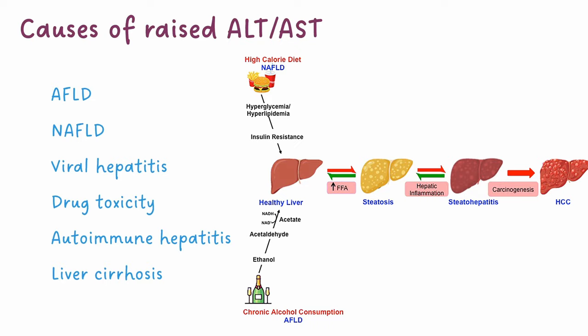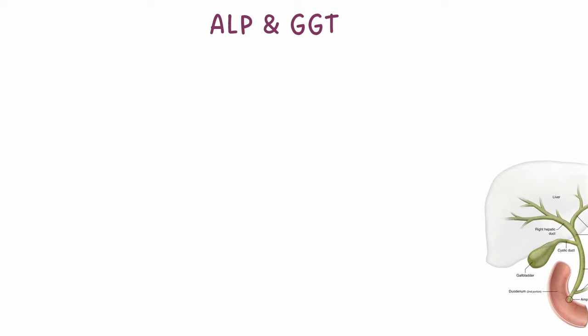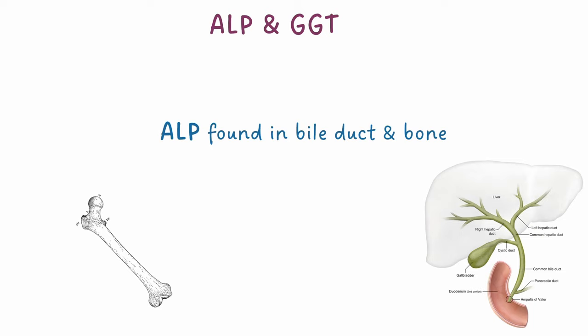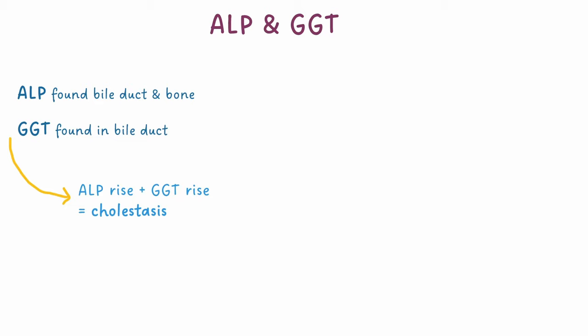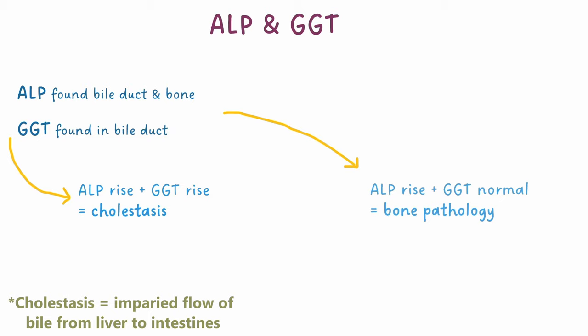ALP and GGT are tests for cholestatic damage. ALP is found in the bile duct and bone, so damage to either of these will cause ALP to be released into the blood. GGT is just found in bile duct cells, making it a more specific test for cholestatic damage. So if you see a rise in both ALP and GGT, you can be fairly confident it's due to cholestasis. A rise in ALP alone is caused by damage to bone.